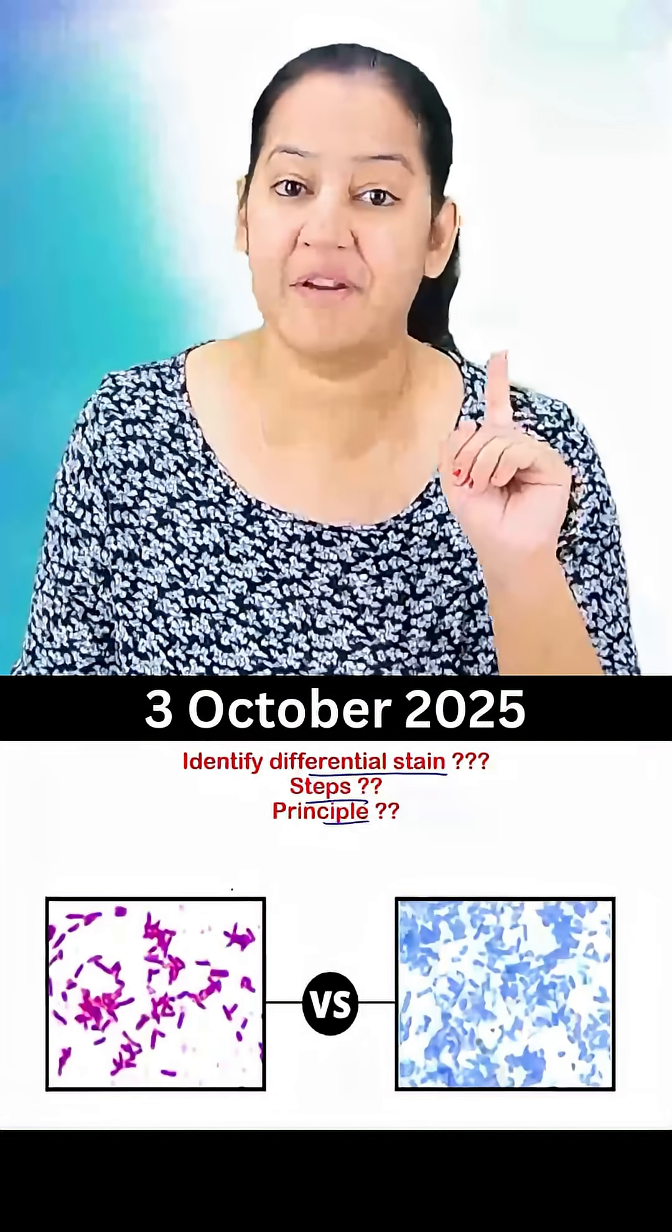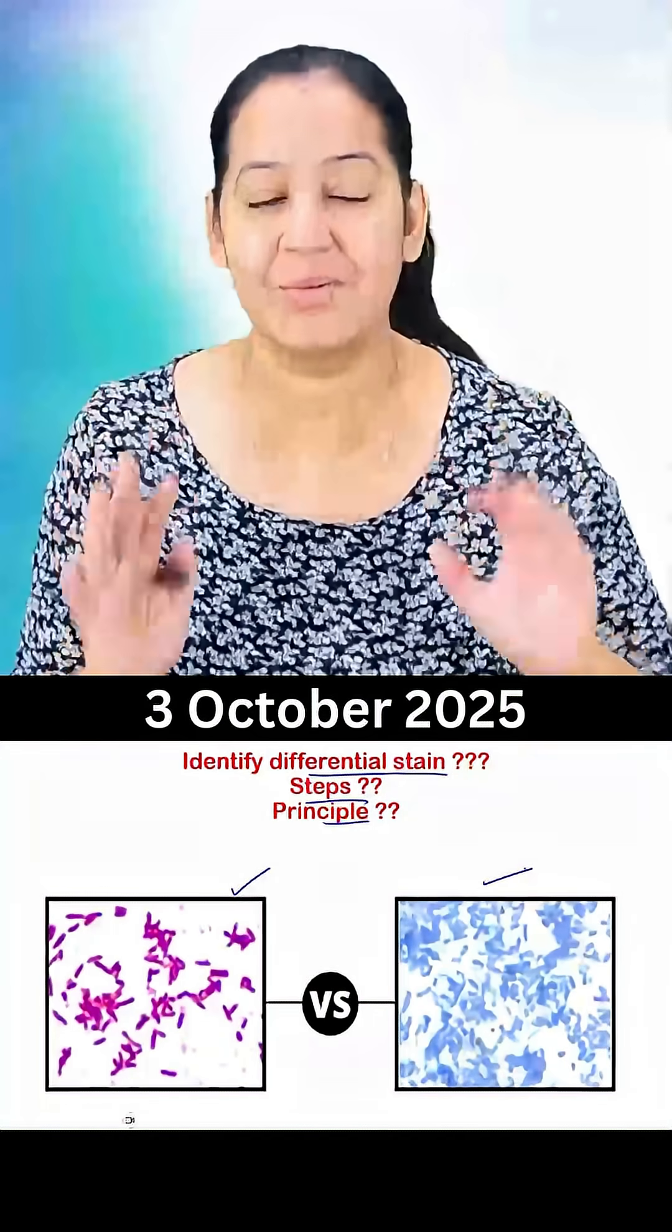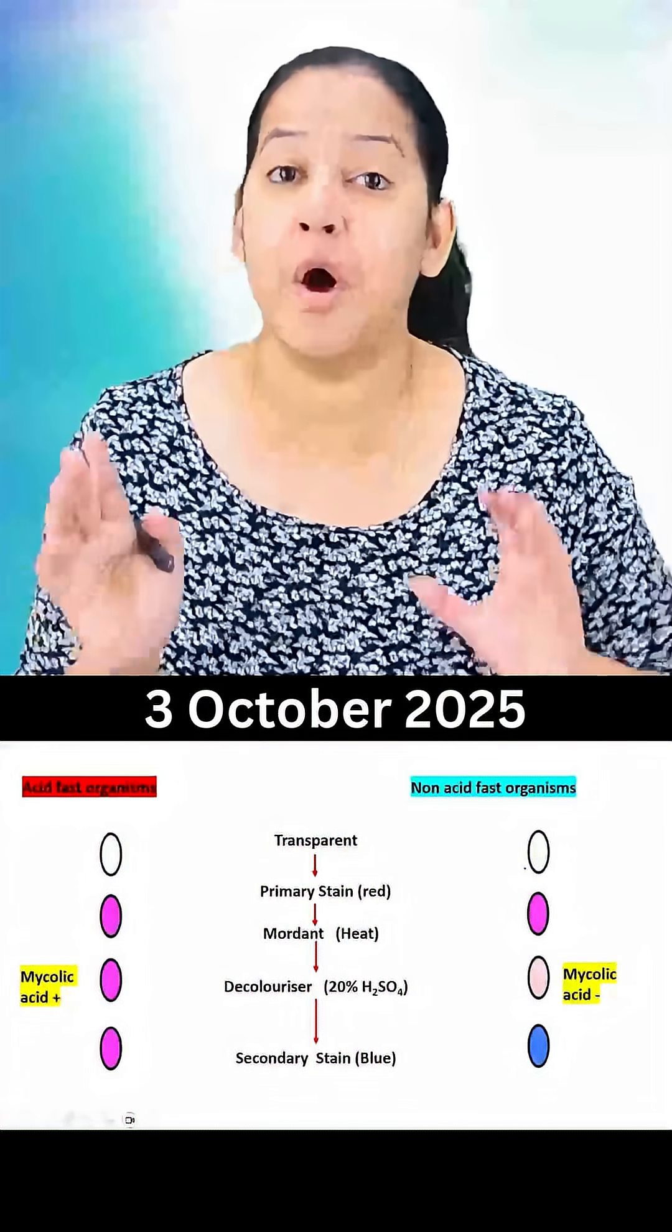In this image we can see some bacteria are red in color, some are blue in color. So this stain is acid-fast stain or ZN stain.